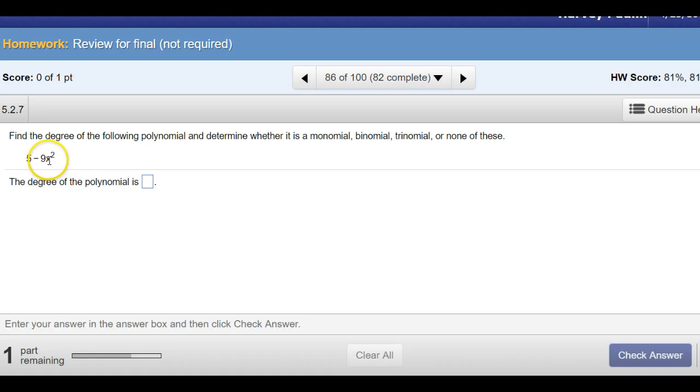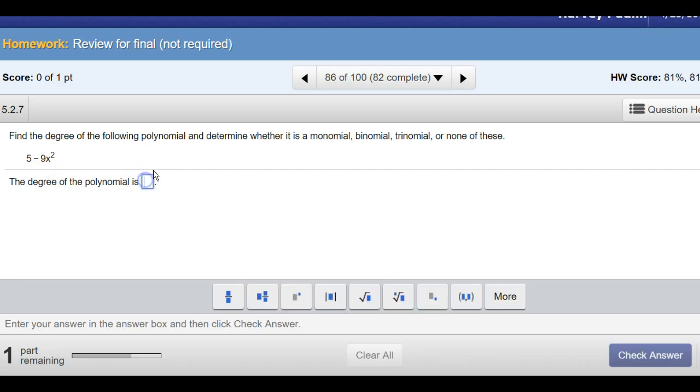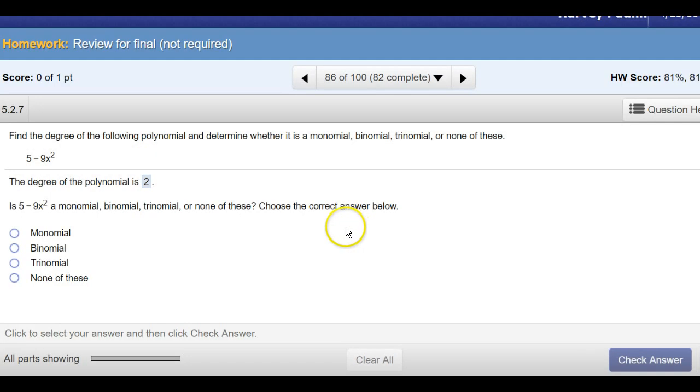So it's a binomial. And the degree is determined by the largest degree of any term. Well, the degree of a term is defined by the sum of its exponents on the variable. So when we have one variable, 2, so the degree of this is 2, they're giving us some easy ones here. And it's, we set a binomial here.